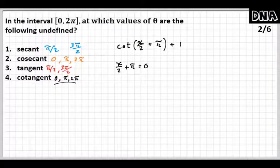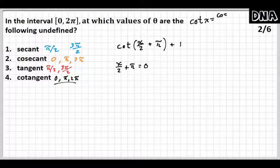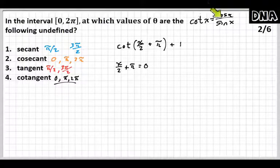Because at 0, sin is 0. So check it out. Cotangent of x equals cos x divided by sin x. And so it's wherever sin x equals 0.